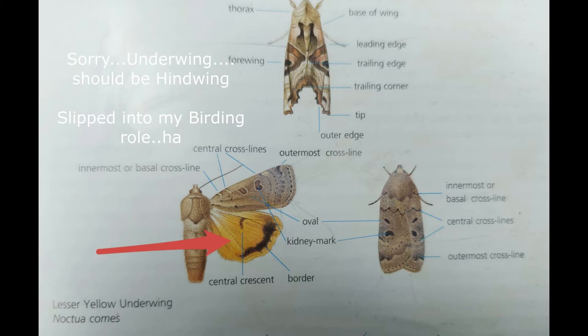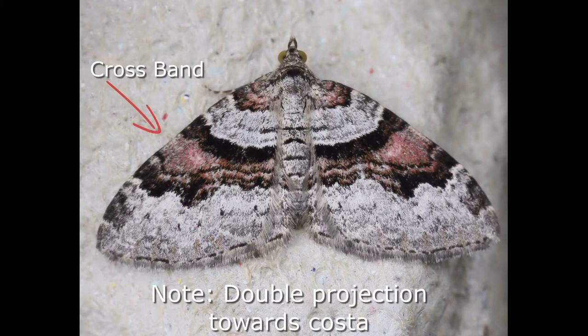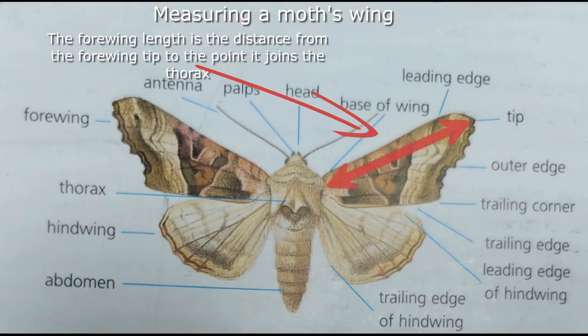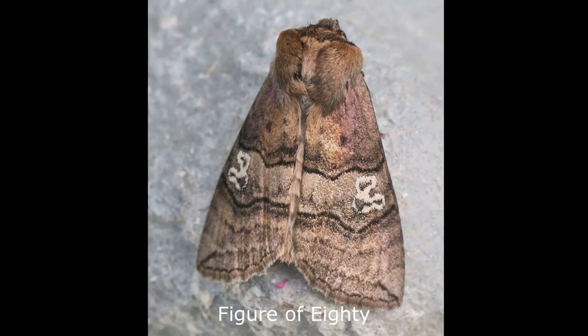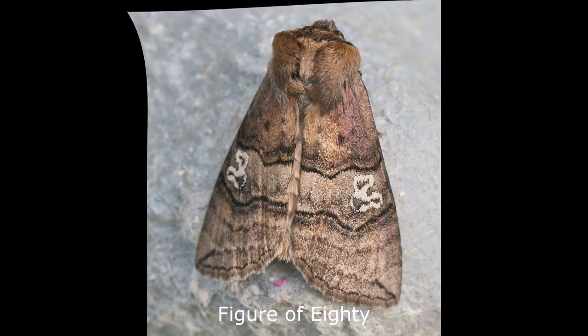If the moth is showing its underwing, note the colour, note any borders and any other marks. Some members of the family Geometridae hold their wings outstretched during the day and a lot of them have bands across the wings which are good identification features. Another useful aid is to measure the forewing of the moth and then compare it with any moth guidebooks. So we've now learnt a fair amount about moth anatomy and identification features — let's get outside and look at some real moths and put everything into practice.